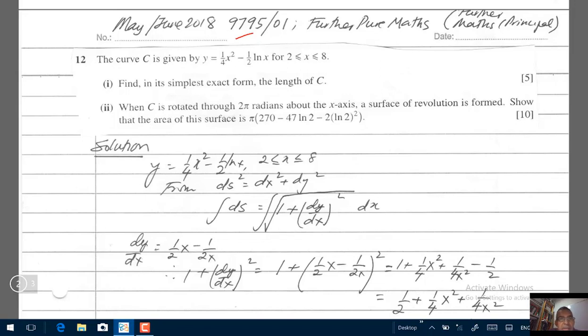It goes like this. The curve C is given by y equals 1 over 4x squared minus half log x for values of x between 2 and 8. We are asked to find in its simplest exact form the length of C. We will talk about part 2 when we get to it.